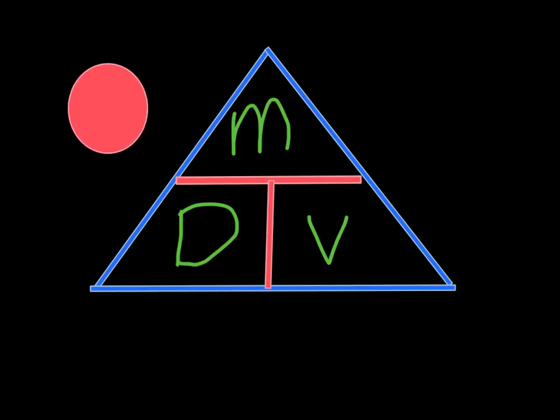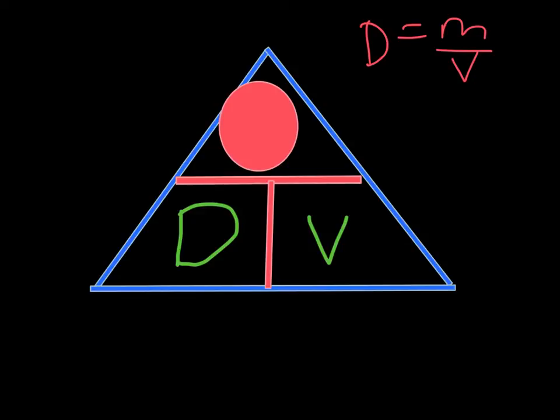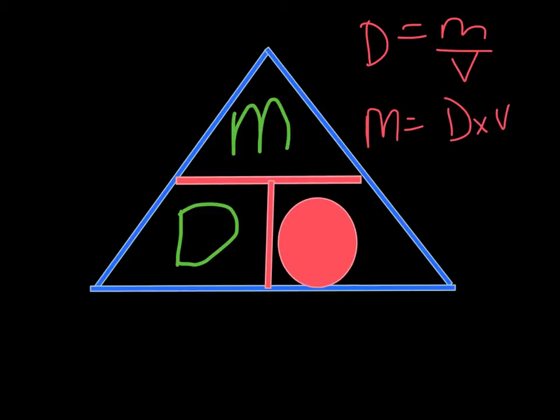So this triangle rule does work. If you cover up the term that you're looking for, for instance density equals mass divided by volume, or mass equals density times volume, or volume equals mass divided by density, they all work. So now all you have to do is remember how to make the triangle so that you can use this to help you think the math through a little bit better if you're having problems manipulating the algebra.